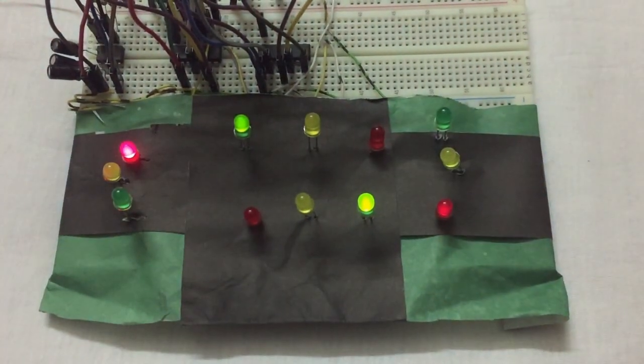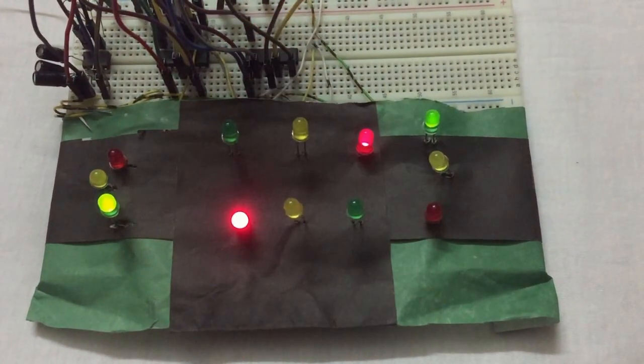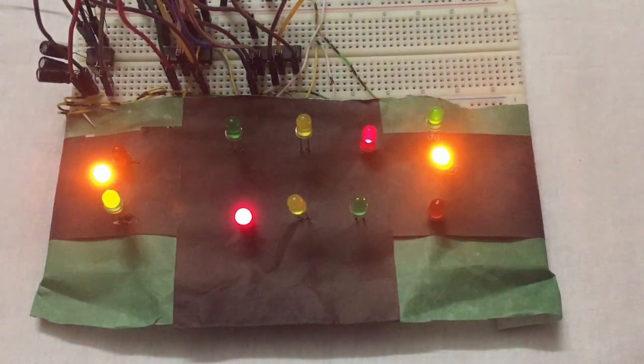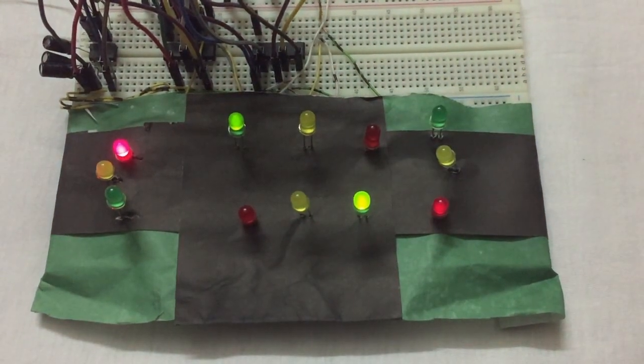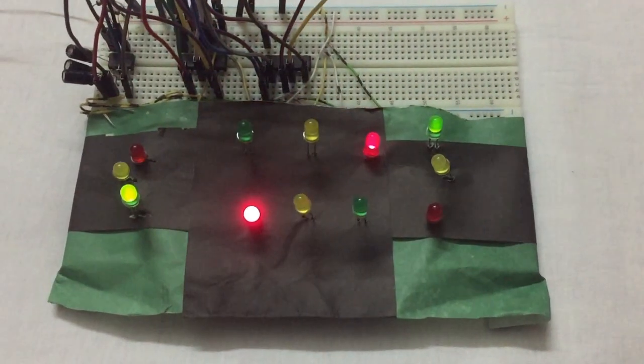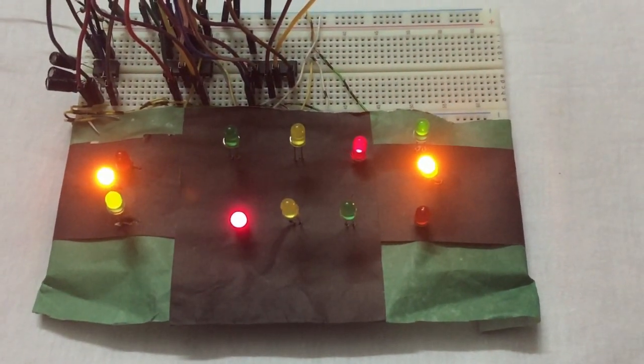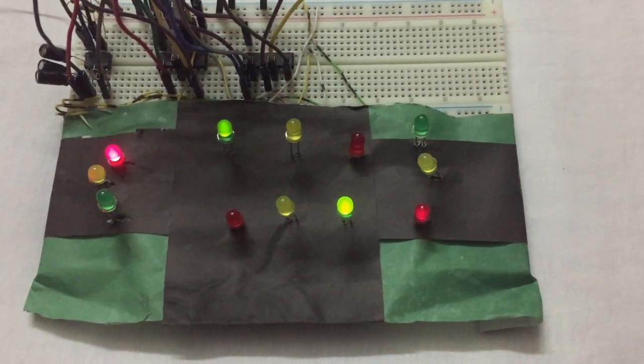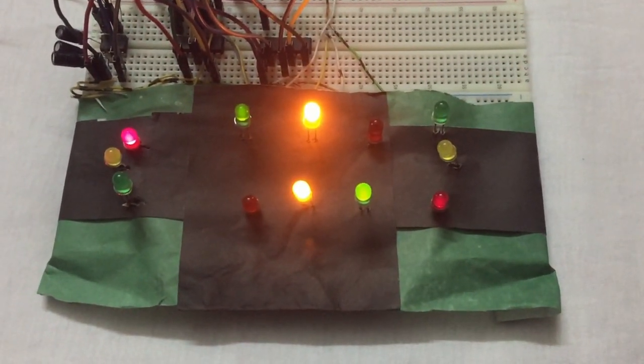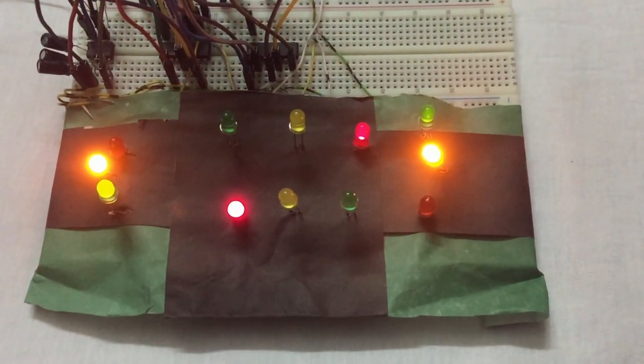So this is our first state 00, then 01, 10, 11, then 00 again. As you can see, after 11, the cycle recycles back to 00. And from that, the same thing happens all over again. Since this was a 2-bit counter, this produces four different outputs from 00 to 11.